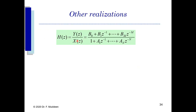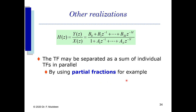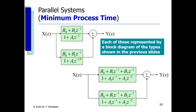The last realization takes a generic transfer function and separates it into a sum of individual transfer functions using partial fractions, producing a series of sub-transfer functions that add together. This is referred to as parallel representation. A parallel representation uses more memory but minimizes processing time, because all sub-transfer functions process simultaneously within one cycle. The downside is that each block requires its own memory, increasing overall memory requirements.